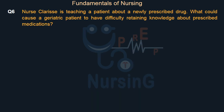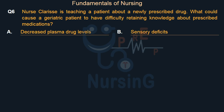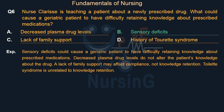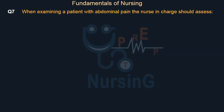Nurse Clarice is teaching a patient about a newly prescribed drug. What could cause a geriatric patient to have difficulty retaining knowledge about prescribed medications? Option A: Decreased plasma drug levels. Option B: Sensory deficits. Option C: Lack of family support. Option D: History of Tourette syndrome. The right answer is Option B: sensory deficits. Decreased plasma drug levels do not alter the patient's knowledge. Lack of family support may affect compliance, not knowledge retention. Tourette syndrome is unrelated to knowledge retention.